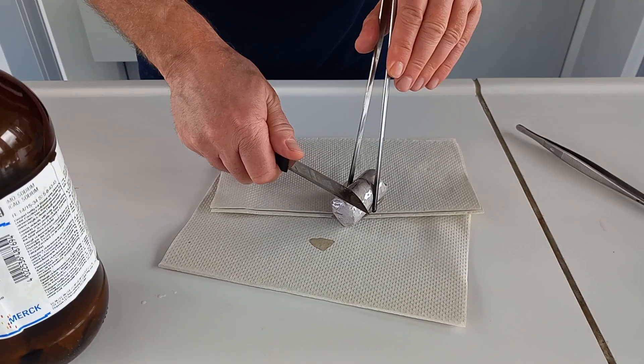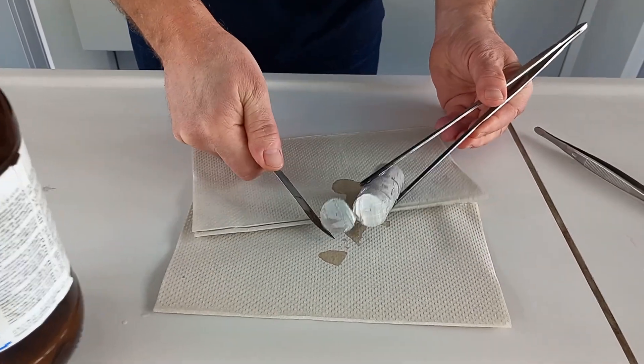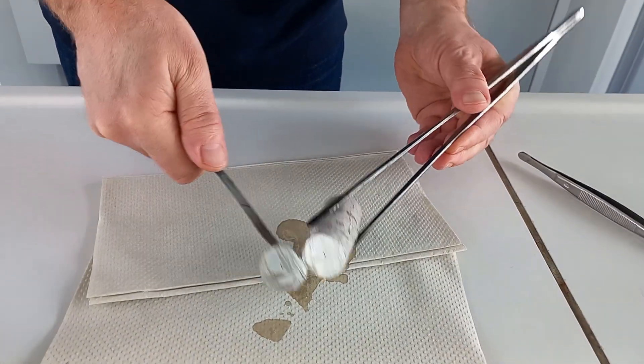Sodium is also a very soft metal, so it can be easily cut with the knife. You can see that the sodium is very shiny on the carved side.